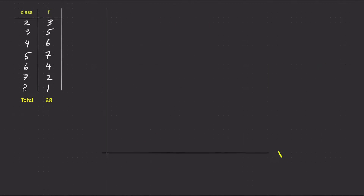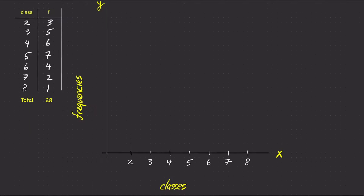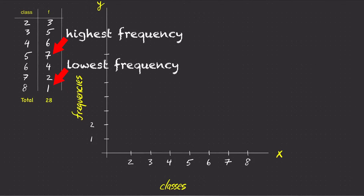Again, to construct a frequency histogram, draw a graph. Classes will be labeled on the x-axis and frequencies will be labeled on the y-axis. Use seven ticks on the x-axis to mark the seven classes. Since the lowest frequency is one and the highest frequency is seven, using seven ticks on the y-axis going from one to seven will be enough to mark all the frequencies.